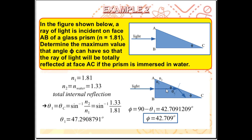Once inside the prism, the light continues until it strikes face AC. The problem asks for the angle phi such that, instead of passing through the interface, the light will be totally reflected. This situation is known as total internal reflection, wherein the angle of incidence theta 1 — measured from the normal to face AC — must be equal to or greater than the critical angle for total internal reflection to occur.